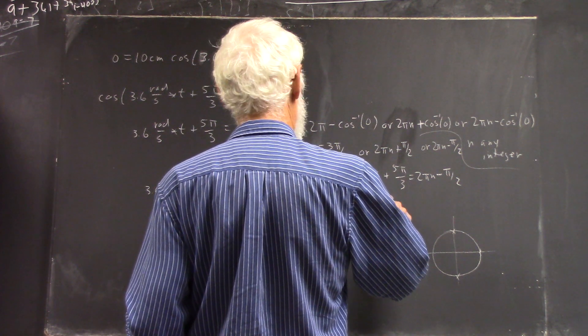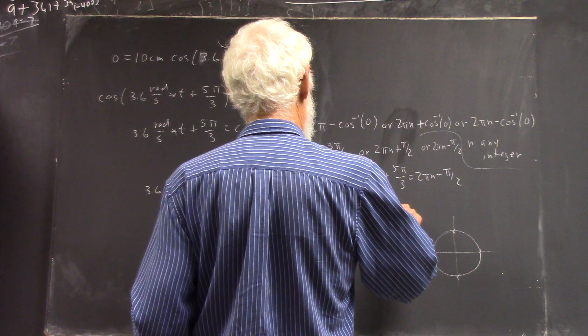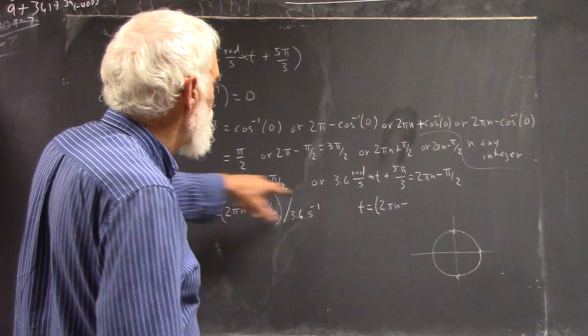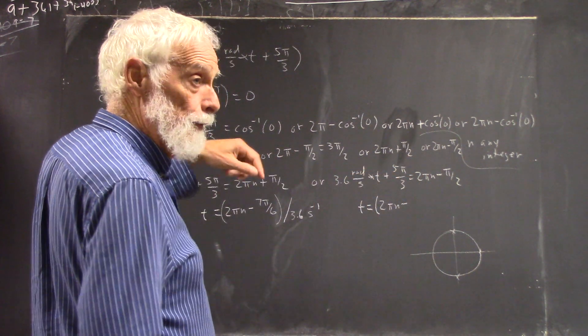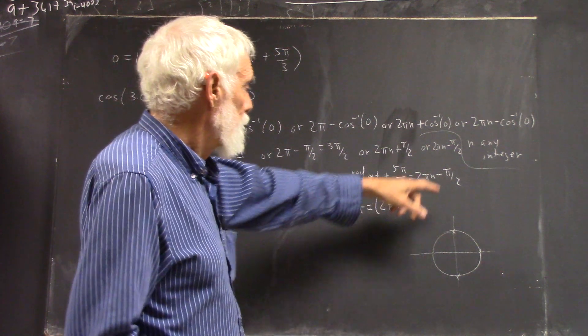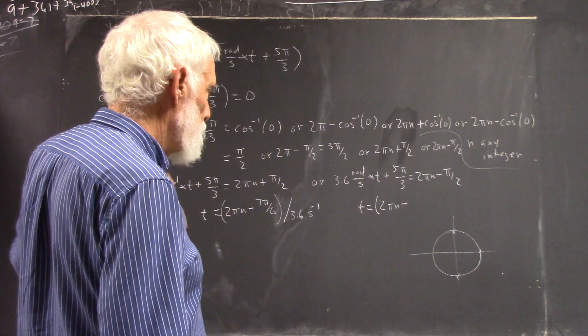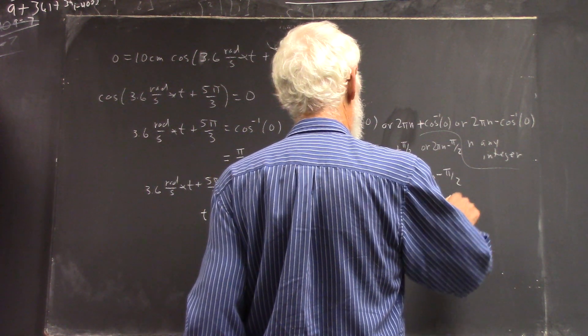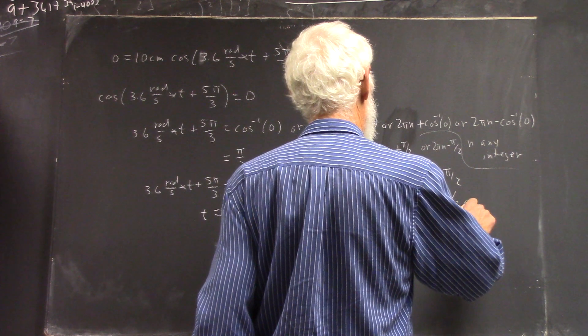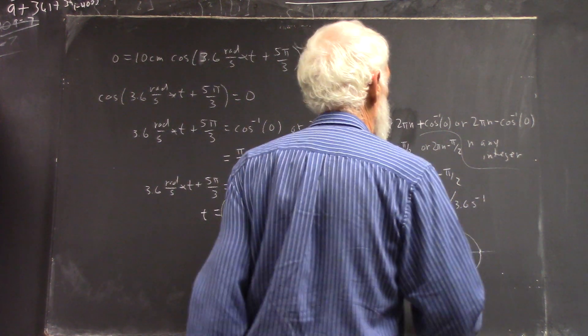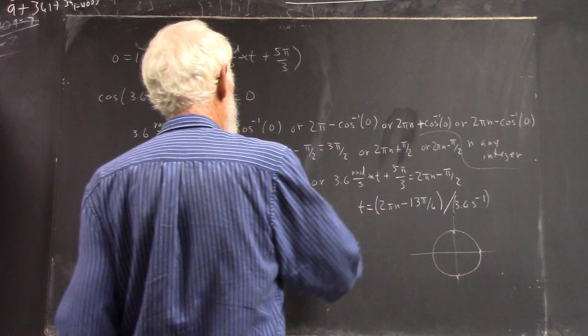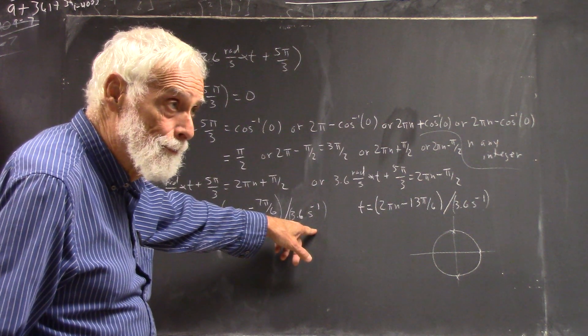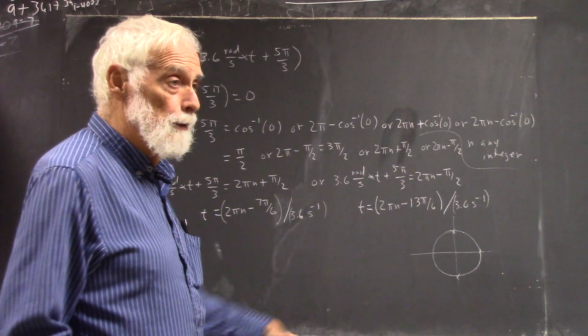In this case, it's 2 pi n minus what? We're going to have, again, negative pi over 2 minus 5 pi over 3 is negative 3 pi over 6 minus 10 pi over 6 is negative 13 pi over 6. I see the units come out in seconds because you're dividing by reciprocal seconds. So, you get an infinite number of solutions.